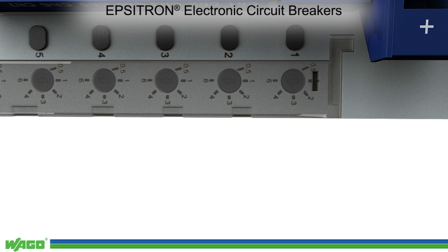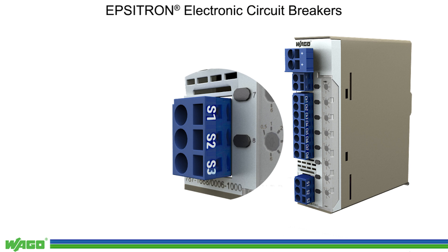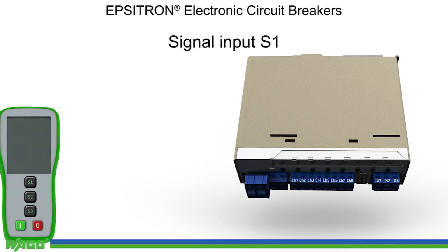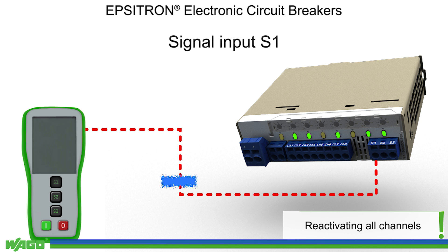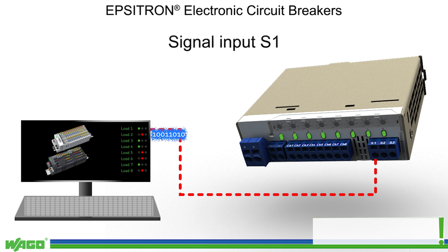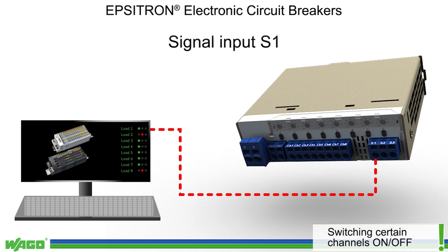WAGO's ECBs feature one digital signal input S1 and two signal outputs S2 and S3 for reading out the operational status. Signal input S1 allows all channels to be remotely reset. In combination with a PLC or an IPC, each channel can be switched on or off separately.